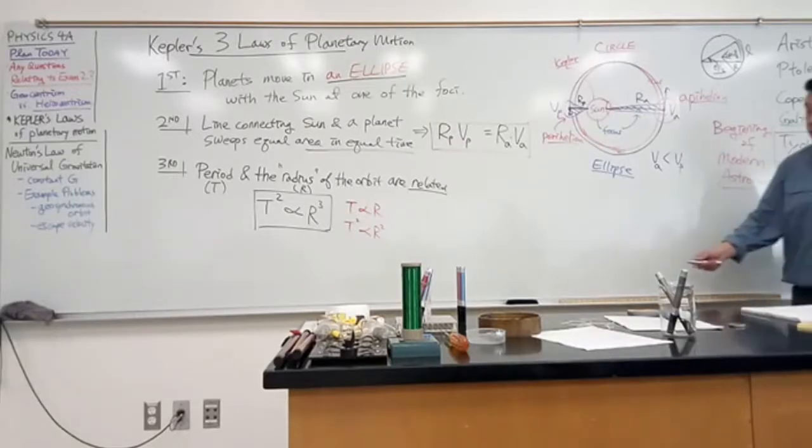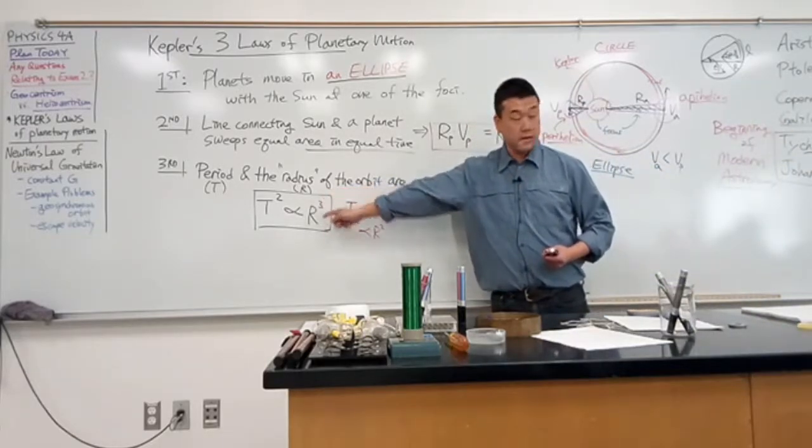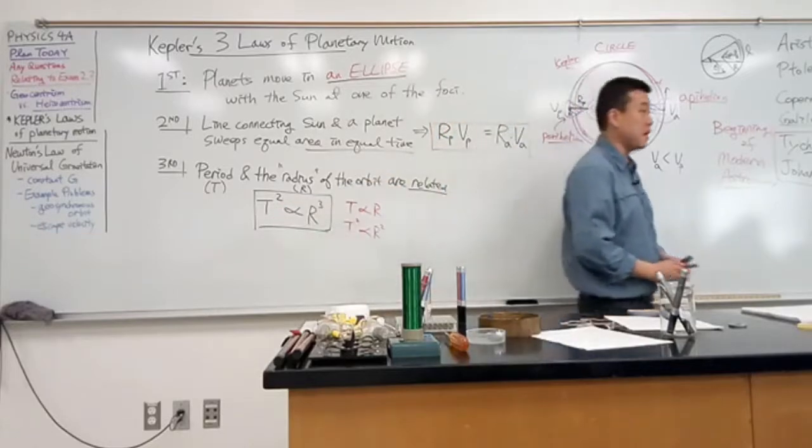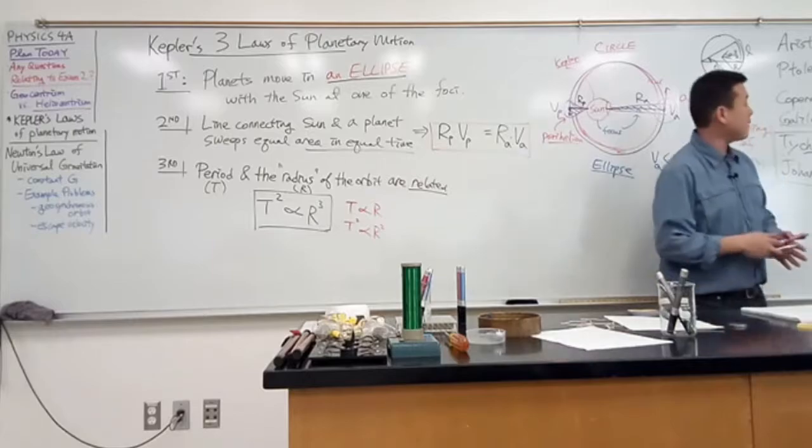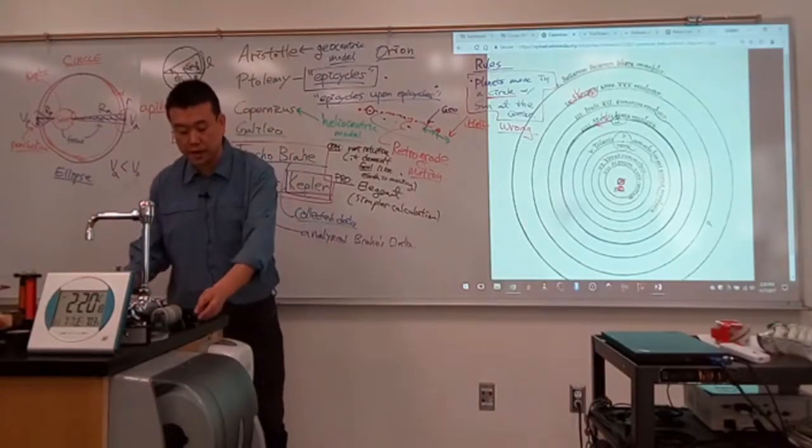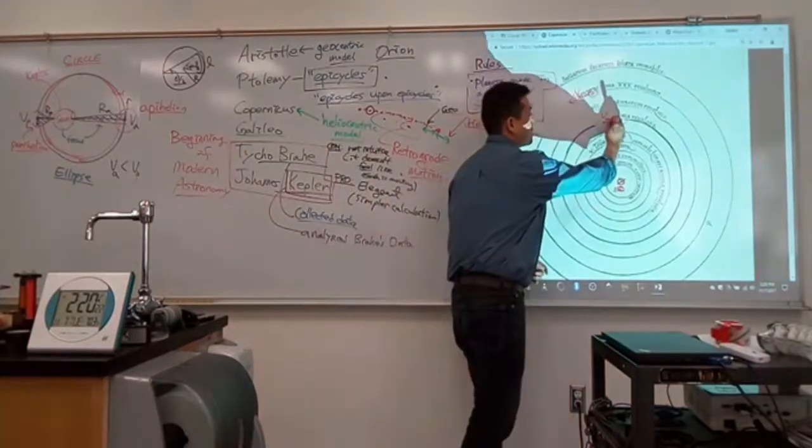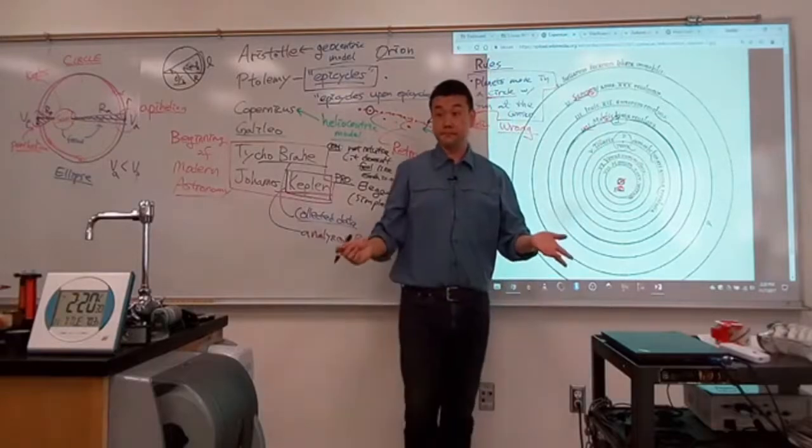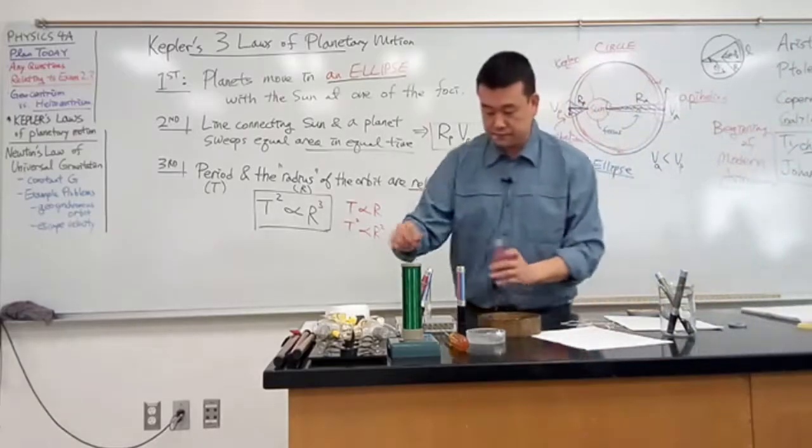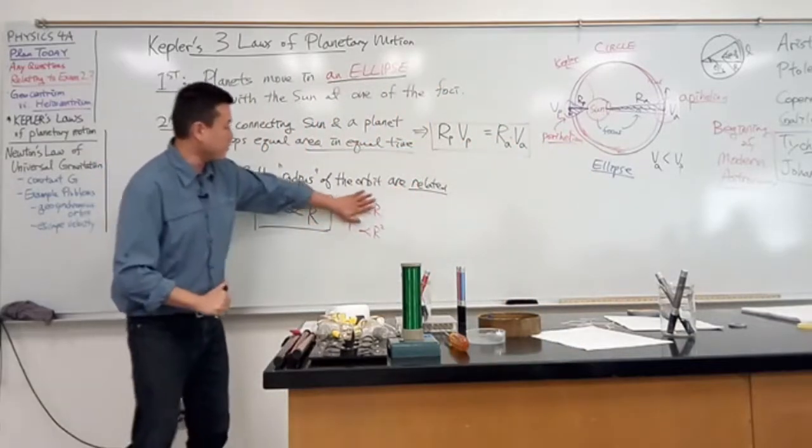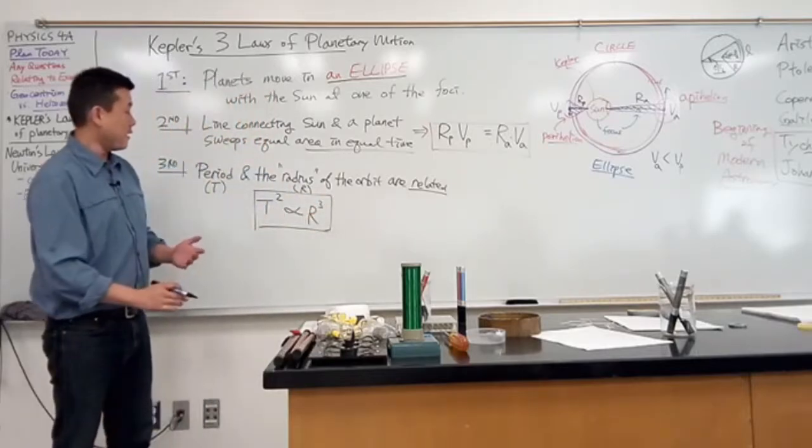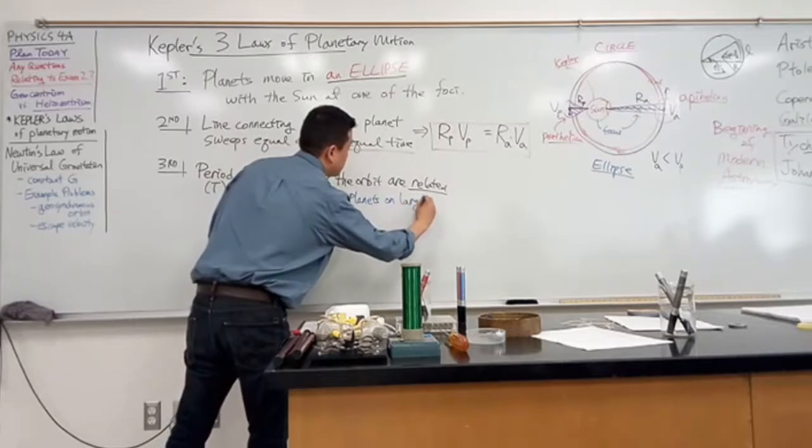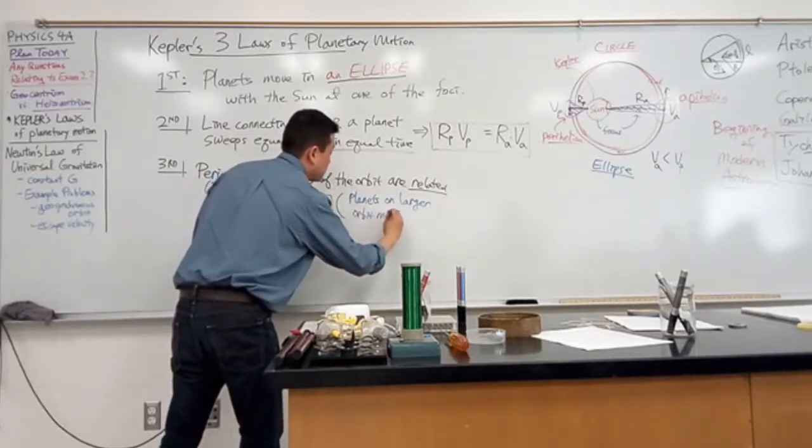So first and second law both deal with each of these planets individually. The third law is different in this sense. It deals with, it compares two different planets. Specifically, it compares a planet at one orbit with another planet at a different orbit. So call this planet one, call this planet two. This is what the third law says. It says that the period and the radius, or the average radius, because it's in an ellipse, so something like a radius, call it semi-major axis or whatever, so something like radius of the orbit are related. Well, how are they related? I always forget this. Let me try to get this right. So I feel like period squared is proportional to radius cubed.